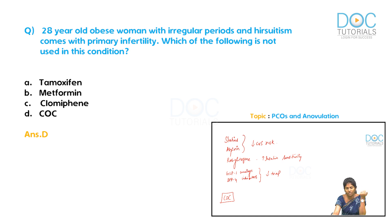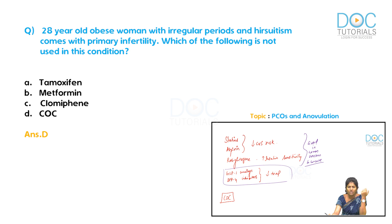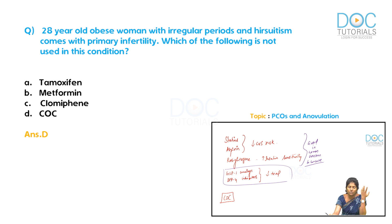Rosiglitazone increases insulin sensitivity and can be used in PCOS, but not for women anxious to conceive. GLP-1 analogues and DPP-4 inhibitors are under trial for PCOS but not yet FDA approved. Combined oral contraceptives (COC) in PCOS correct menstrual abnormalities, and fourth-generation COC with antiandrogen compounds may address hirsutism and acne, but COC has no effect on insulin resistance or weight management.